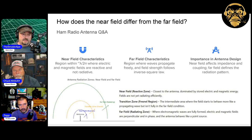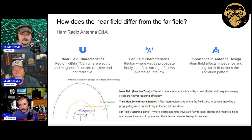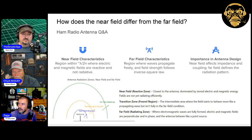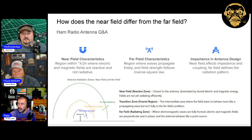People will take measurements with things like field strength meters, nano VNAs, and tiny SAs. But you really want to be in the far field if you want an accurate representation of what your antenna is doing, because of that chaos taking place in the near field.